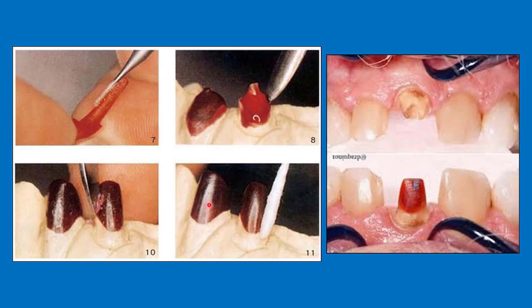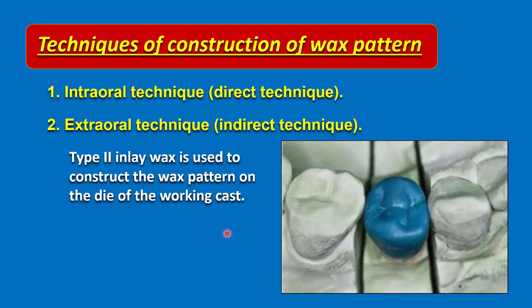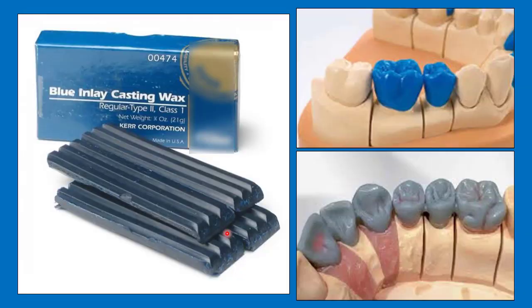This will then be sent to the lab for wax elimination, minor correction, and investment. Then we will receive it as metal and cement it on the tooth. The second technique is the extraoral technique, or indirect technique. Type 2 inlay wax is used to construct the wax pattern. There is no specific color for the inlay casting wax, but generally it is blue or dark blue.